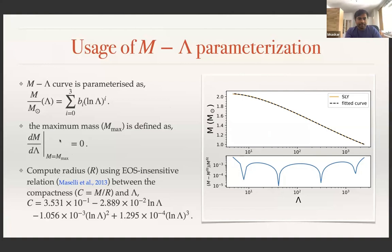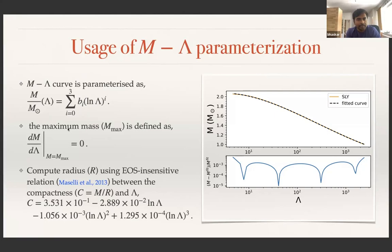To get the radius, we use an equation of state insensitive relationship between the compactness of the neutron star and the tidal deformability. Given a parameter set and a value of lambda, we calculate the mass using this parametric model, then input that mass and tidal deformability value into the EOS-insensitive relation to get the radius. Therefore, all macroscopic properties of a neutron star can be defined by these four parameters, and our target is to constrain these parameters from astrophysical observations using Bayesian statistics.